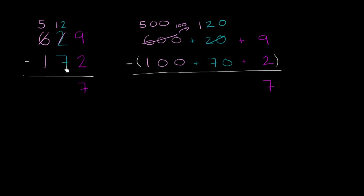12 tens minus 7 tens is 5 tens. Or you could say 120 minus 70 is 50.